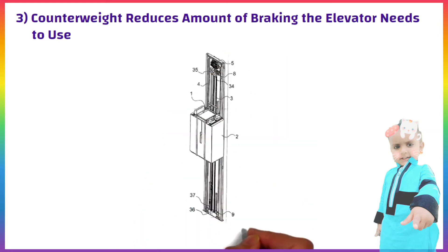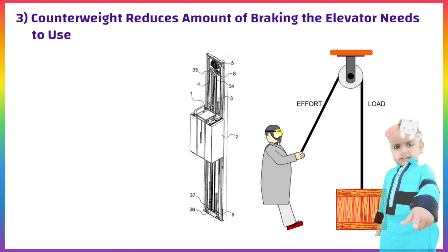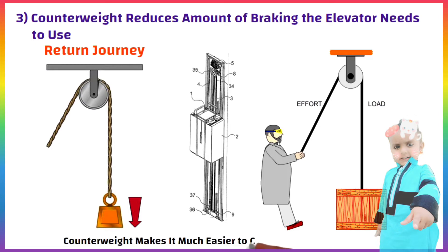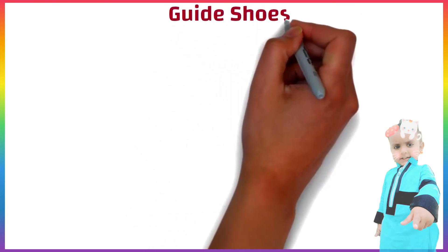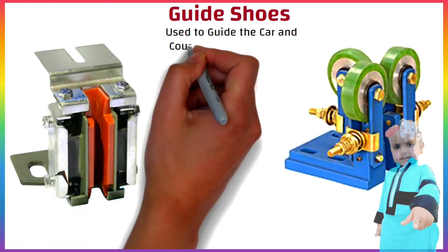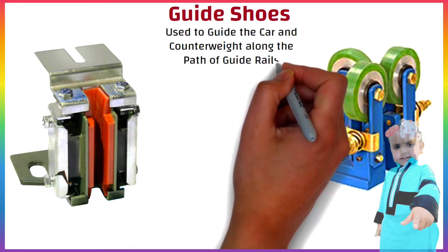Imagine if there were no counterweight — a heavily loaded elevator car would be really hard to pull upwards, but on the return journey it would tend to race to the ground all by itself if there were not some sort of sturdy brake to stop it. The counterweight makes it much easier to control the elevator car. Guide shoes are devices used to guide the car and counterweight along the path of the guide rails.